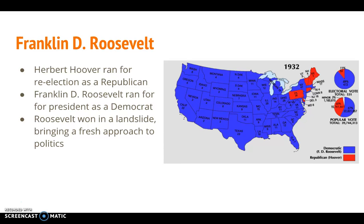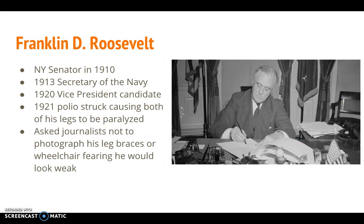Franklin Delano Roosevelt was a New York senator in 1910. In 1913 he was Secretary of the Navy. In 1920 he was the vice presidential candidate, but the Democrats lost to Warren G. Harding. In 1921, Franklin D. Roosevelt contracted polio, which paralyzed both of his legs. Polio destroys nerve cells in the spinal cord. He asked journalists not to photograph his leg braces or wheelchair, fearing he would look weak, so most pictures showed him behind a desk or seated.